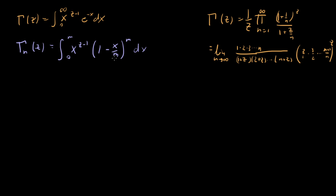Hopefully this is ringing some bells, because this term — (1 minus x over m) to the m — is what you see in the limit definition for Euler's number. If we had this outside of an integral, we'd say that in the limit as m goes to infinity, this is exactly e to the minus x. So you can easily imagine how in the limit where m goes to infinity, this integral is exactly the same as the original gamma function.